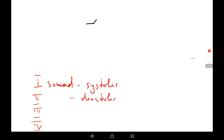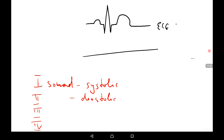We will now draw an ECG with simultaneous recording of the phonocardiogram to analyze the correspondence between the two graphs. The ECG shows P, Q, R, S, T waves, and below it the phonocardiogram. The first systolic sound occurs just after the R wave. The R wave is produced by the systole of the ventricles, the closure of AV valves, the ejection of blood into the aorta and pulmonary trunk, and the contraction of papillary muscles.